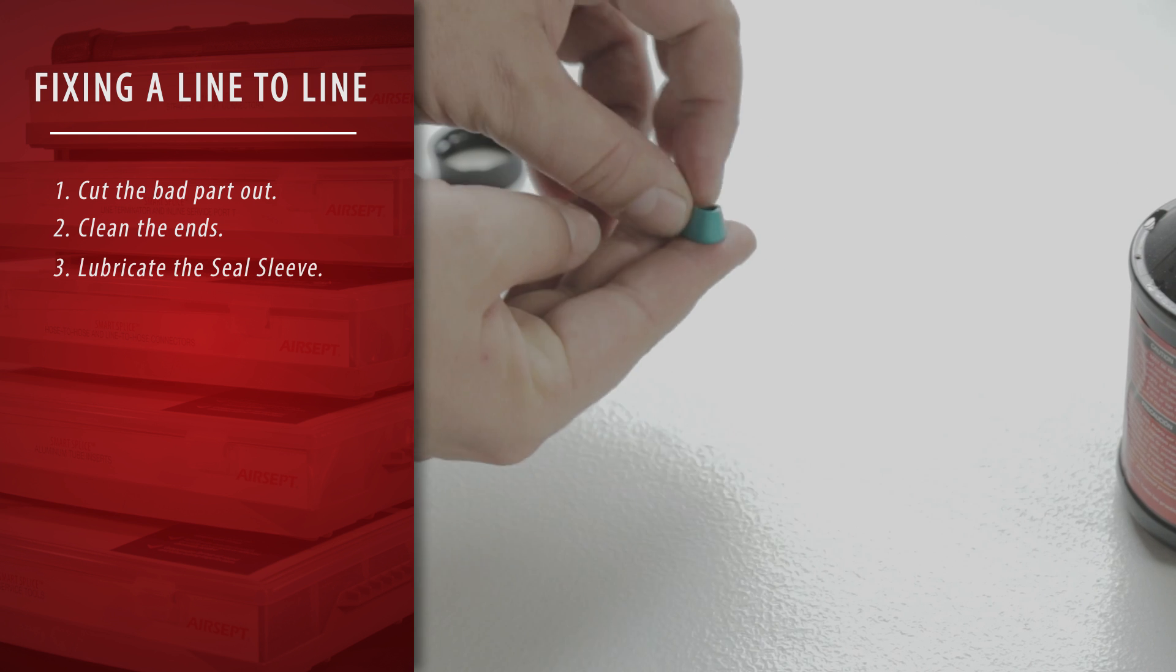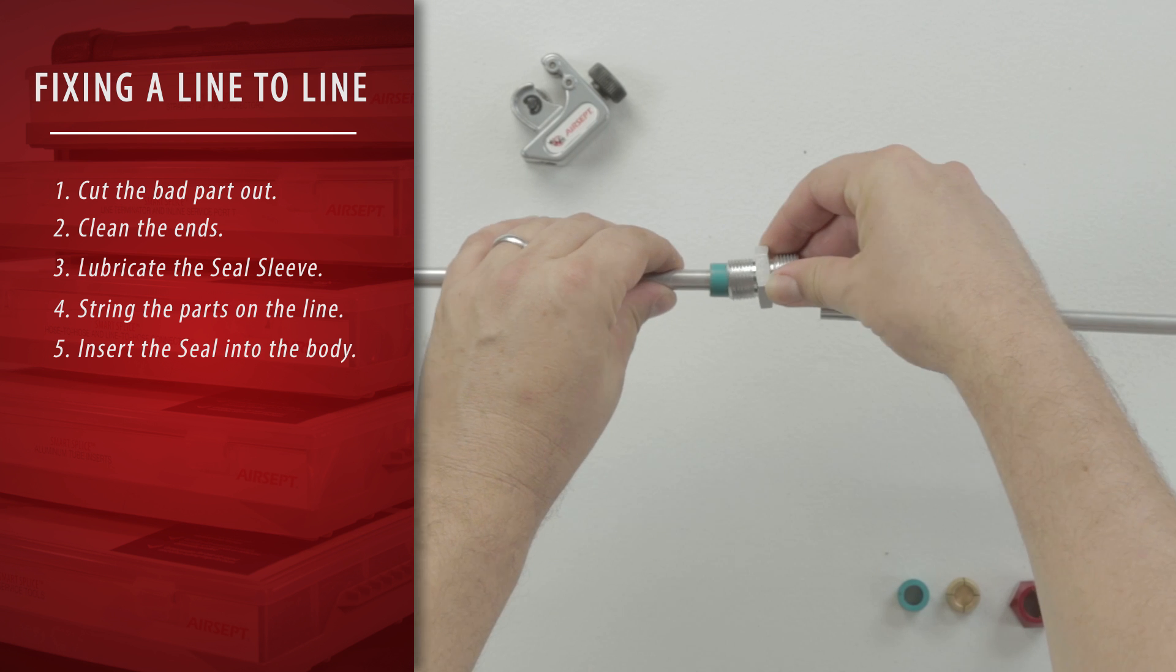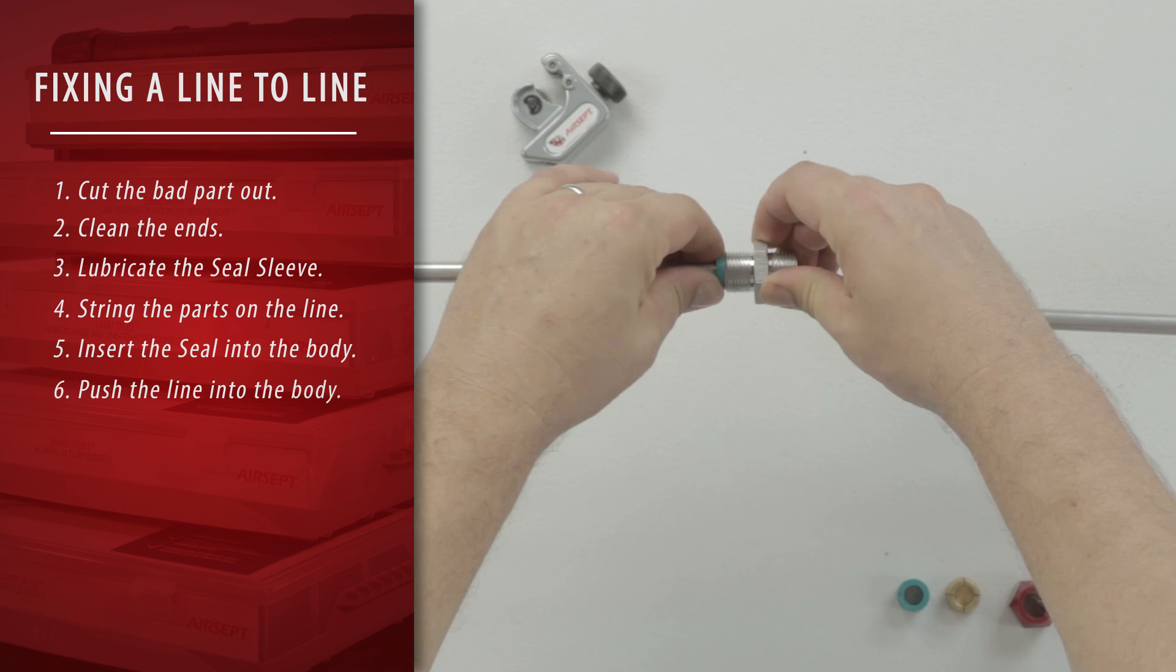Lubricate the seal sleeve. String the parts on the line. Insert the seal into the body. Push the line into the body.